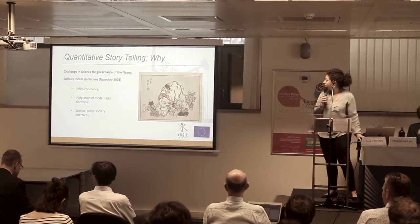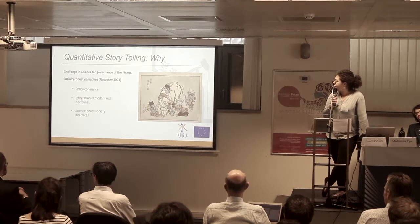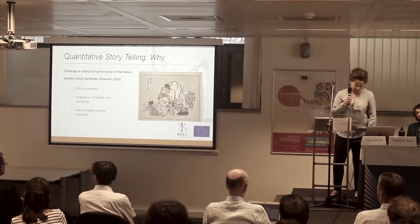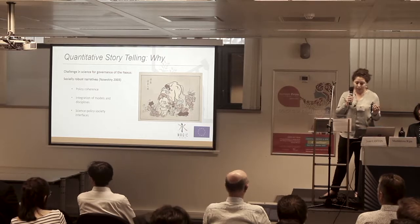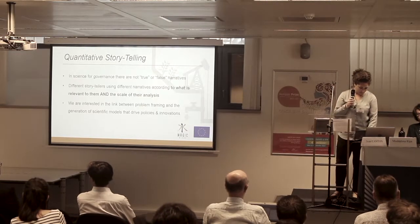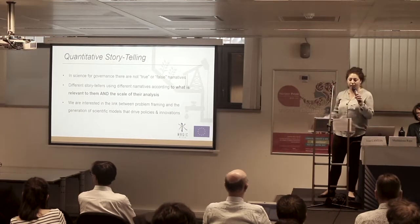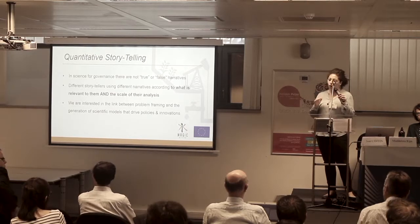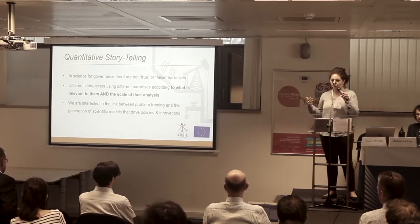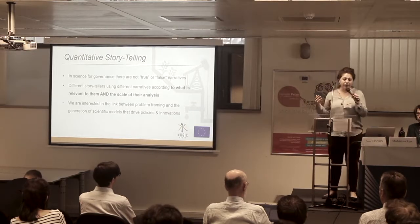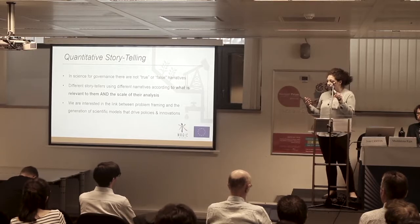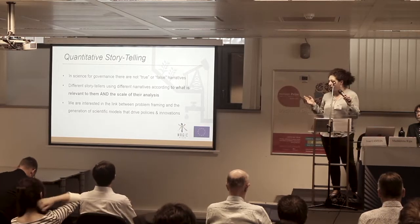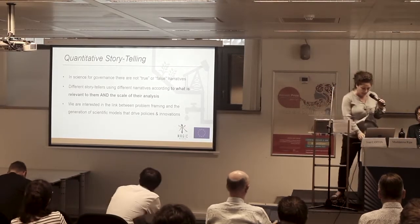Why do we need quantitative storytelling? To build a socially robust narrative — for policy coherence. This is a very challenging aspect of governance, especially for Nexus security. The basic premise of quantitative storytelling is that in science for governance, there are no true or false narratives, but only different narratives, different points of view, different scales of analysis. Different narratives depend on what is relevant to the storyteller and the scale of analysis. We are interested in the link between the problem framing, the policies, and the generation of scientific models addressing those policies.